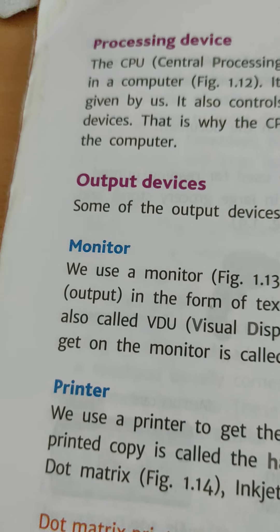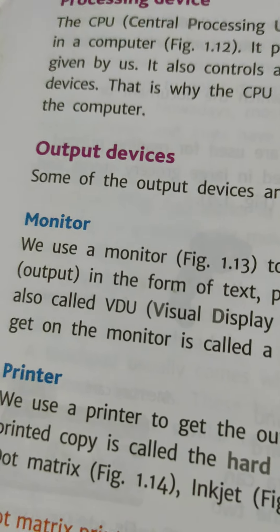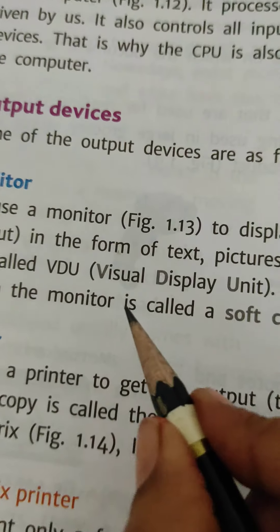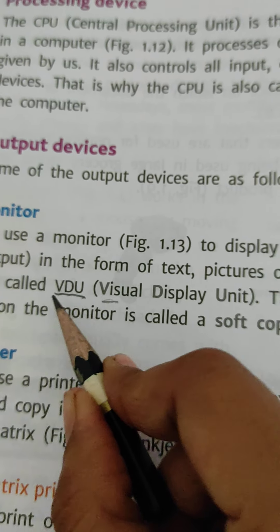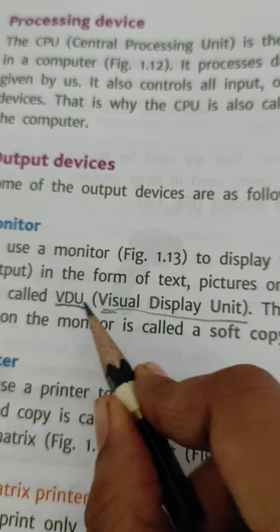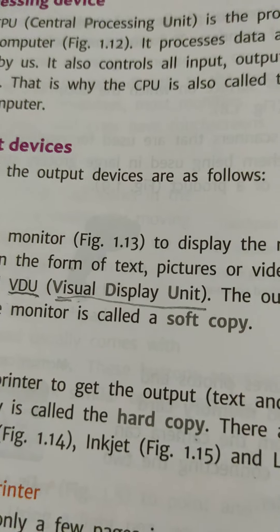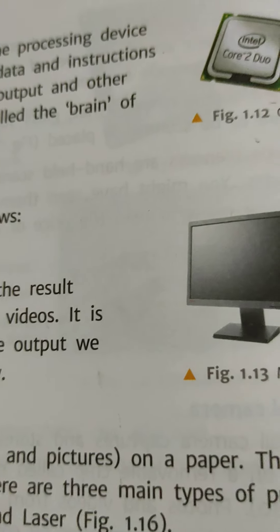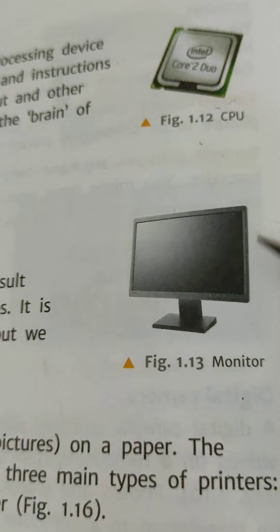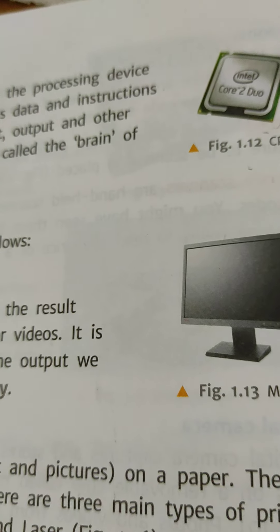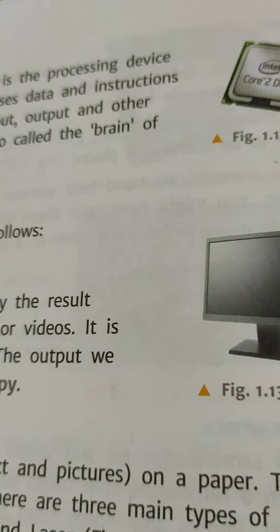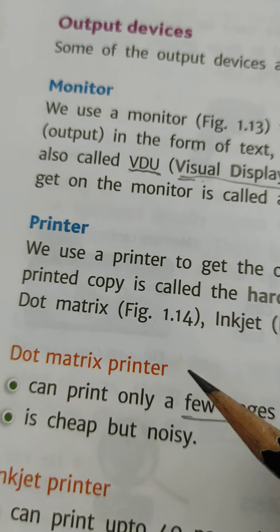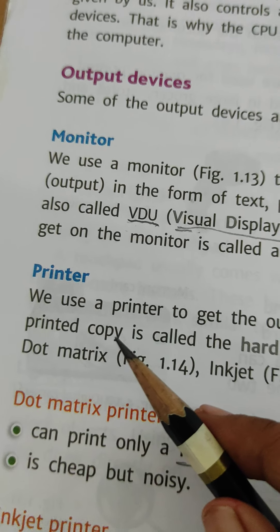Monitor is an output device. It is the most common computer output device. We use a monitor to display the result in the form of text, picture, or videos. It is also called a visual display unit, or VDU — V means visual, D means display, U means unit. The output we get on the monitor is called a soft copy, and this device is called a soft copy output device. After shutting down the computer, that output will erase — that is why it is a soft copy output device.